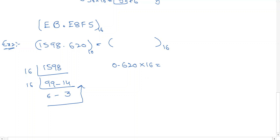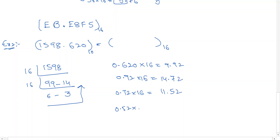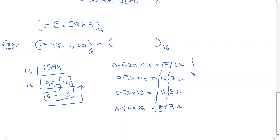The integer answer is read from bottom to top. For the fractional part: 0.620 multiplied by 16 gives 9.92. Take 0.92 multiplied by 16 to get 14.72. Take 0.72 multiplied by 16 to get 8.32. Reading top to bottom for the fractional part, the digits are 9, E (14), and 8. So the integer result is 63E and the fractional result is 9.EB8, giving the final answer as 63E.9B8 in base 16.